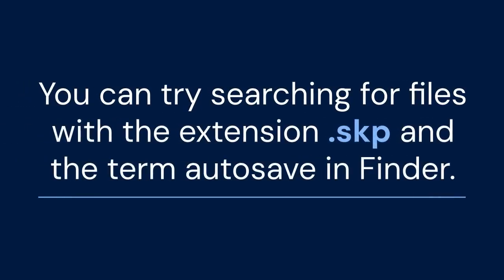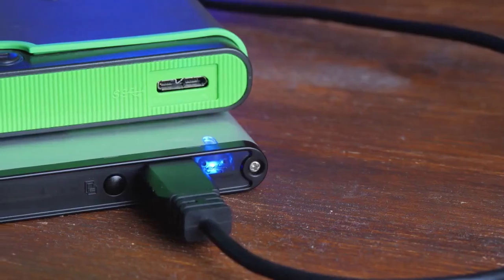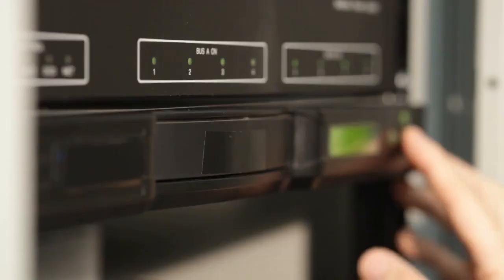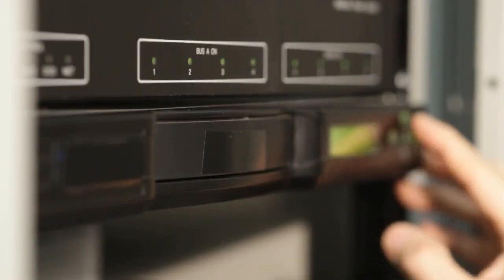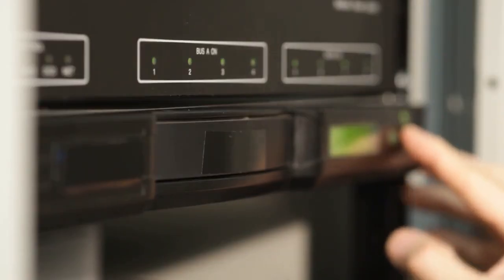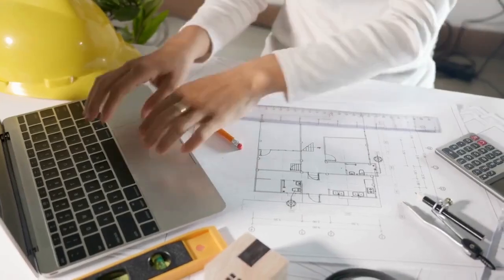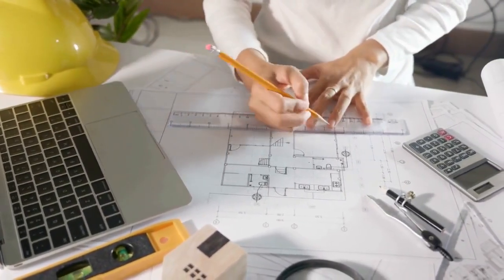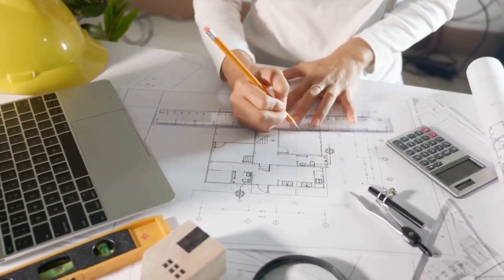For Mac users, the autosaved files are often found in a temporary items folder. You can try searching for files with the extension .skp and the term 'autosave' in Finder. If you find a promising autosaved file, make a copy of it before opening it — this protects the original file in case something goes wrong. Open the copied file in SketchUp. Hopefully, this file contains most, if not all, of your recent work.